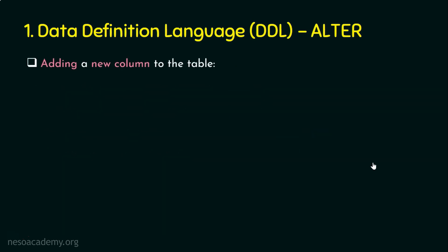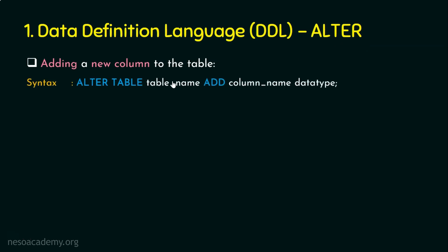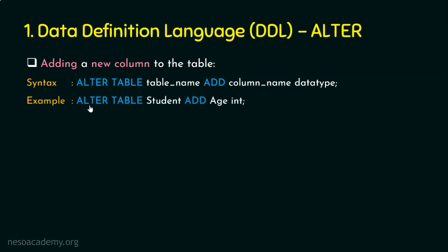Let's start with the first use case: adding a new column to the table. We're not creating a new table; we're altering an existing one. The syntax is: ALTER TABLE table_name ADD column_name data_type. For example: ALTER TABLE student ADD age INTEGER.